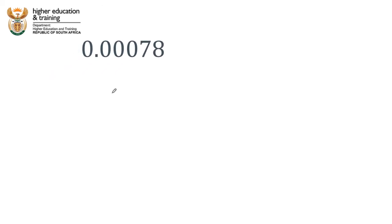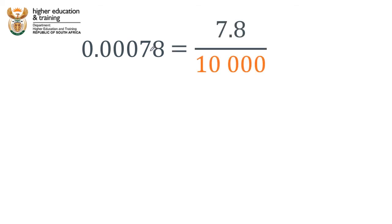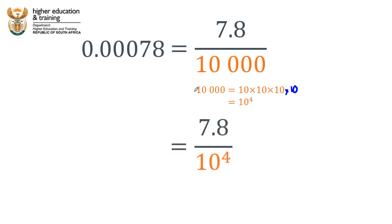So what does that mean? It means that 0.00078 we can rewrite as 7.8 divided by 10,000. That was 10 to the power of 4 — 10,000 is 10 times 10 times 10 times 10, which is 10 to the power of 4. So this number, 0.00078, we can write as 7.8 divided by 10 to the power of 4. And this is almost in scientific notation.